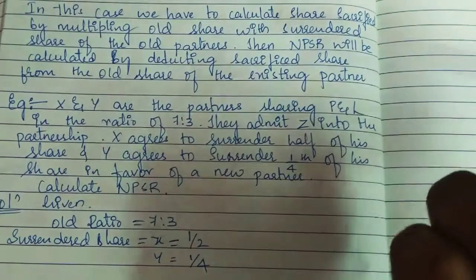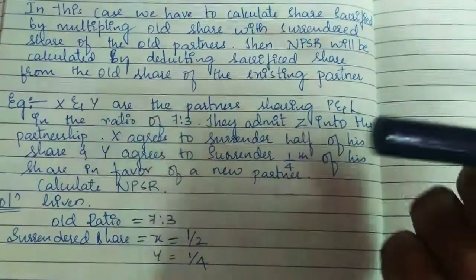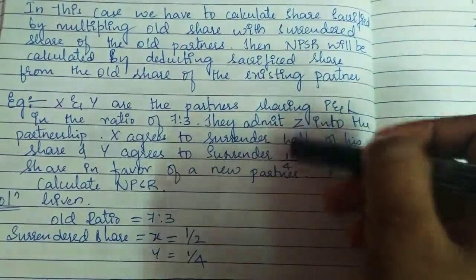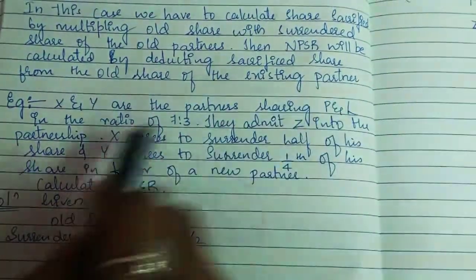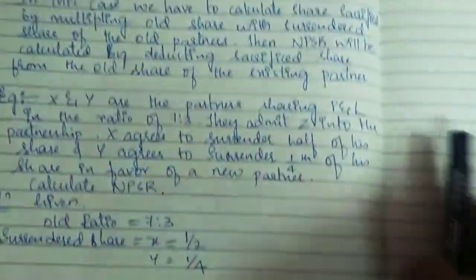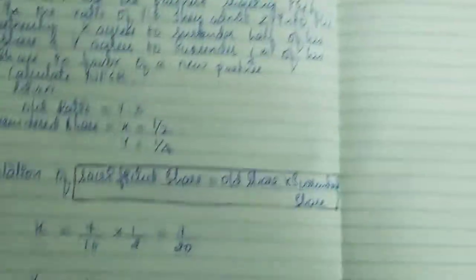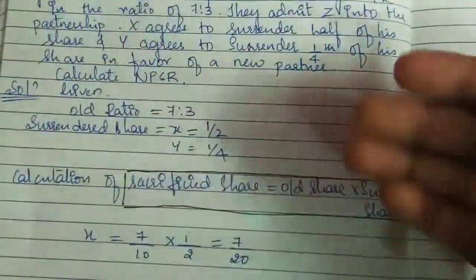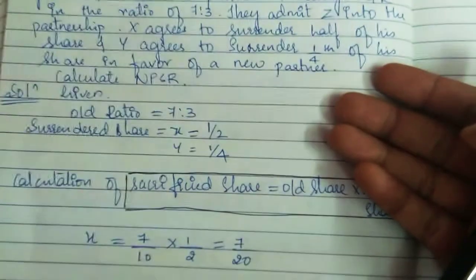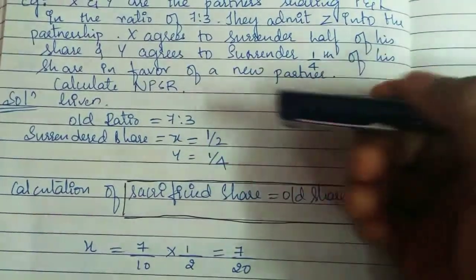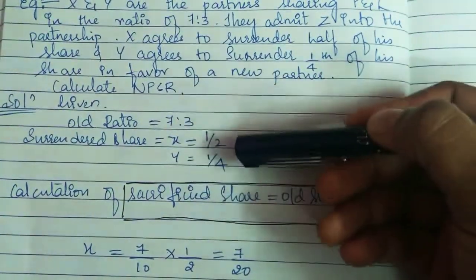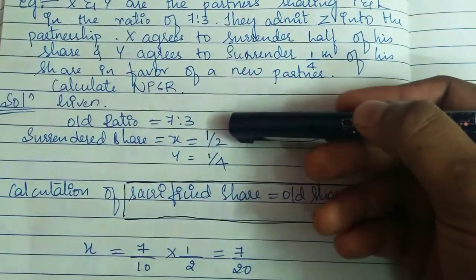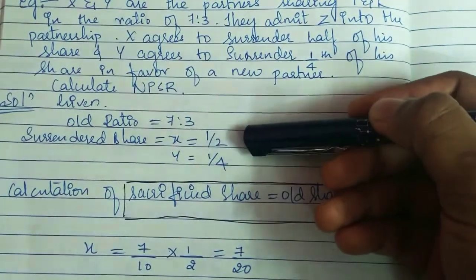Y agrees to surrender 1/4 of his share in favor of the new partner. So the surrender shares are: X surrenders 1/2 and Y surrenders 1/4. Coming to the solution part, the given information is: old ratio is 7:3, surrendered share of X is 1/2, and surrendered share of Y is 1/4.